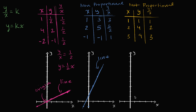Let's graph it anyway for fun. When x is one, y is one. When x is two, y is four. When x is three, y is nine. This actually looks like the graph of y equals x squared. And if these points are sampled from y equals x squared, then when x is zero, y would be zero — so this one does go through the origin. But notice it's not a line; it's not a linear relationship. So this is also not proportional.